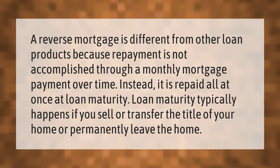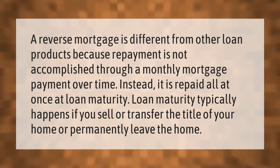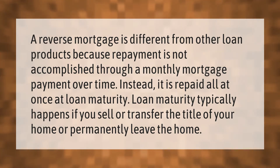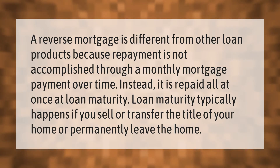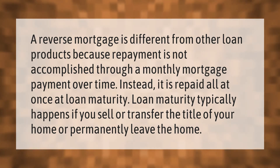A reverse mortgage is different from other loan products because repayment is not accomplished through a monthly mortgage payment over time. Instead, it is repaid all at once at loan maturity. Loan maturity typically happens if you sell or transfer the title of your home.